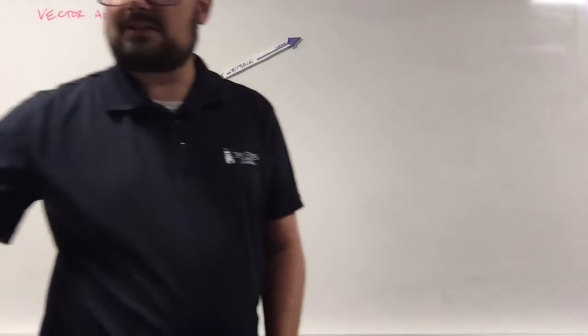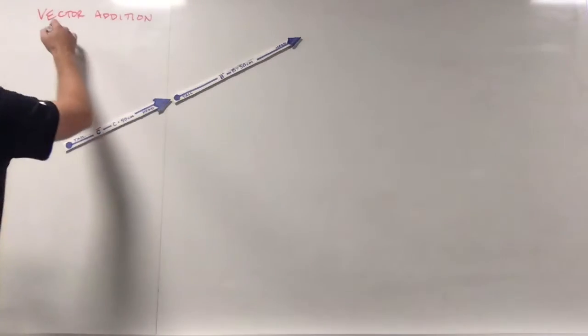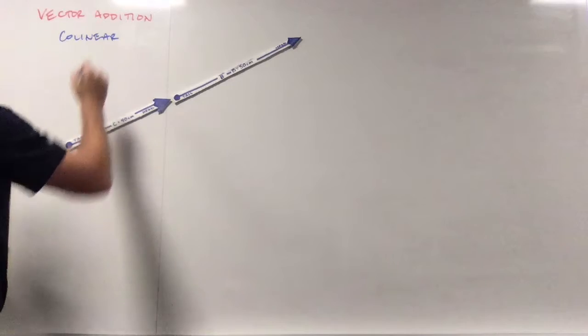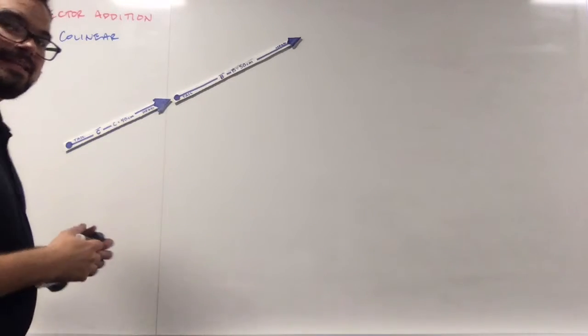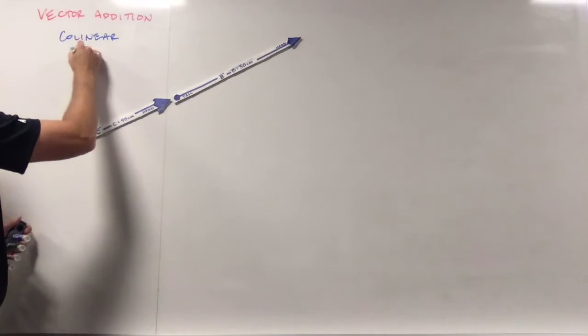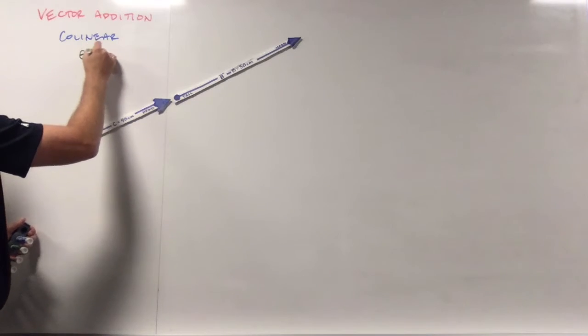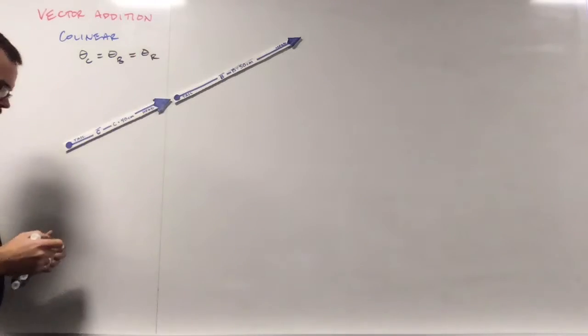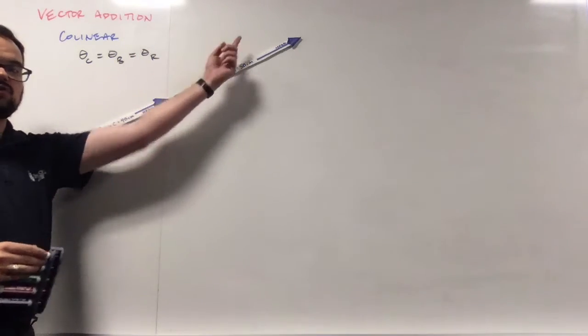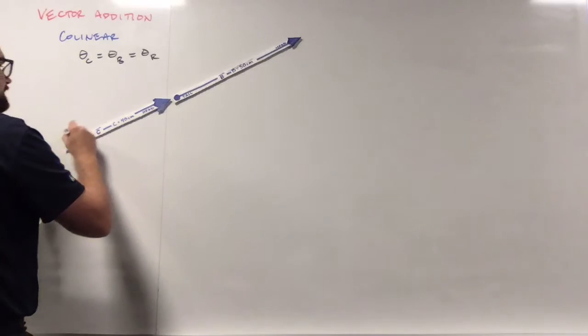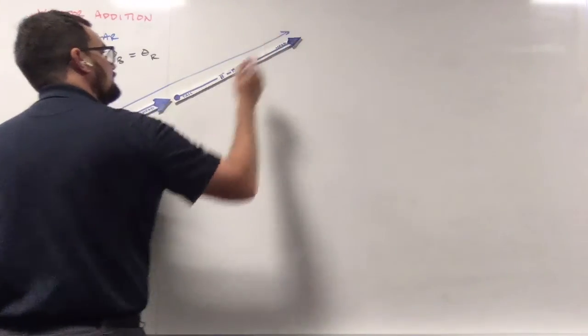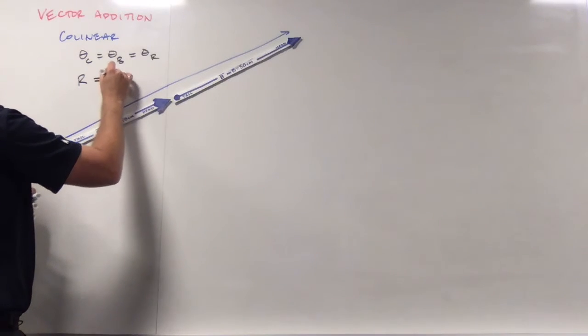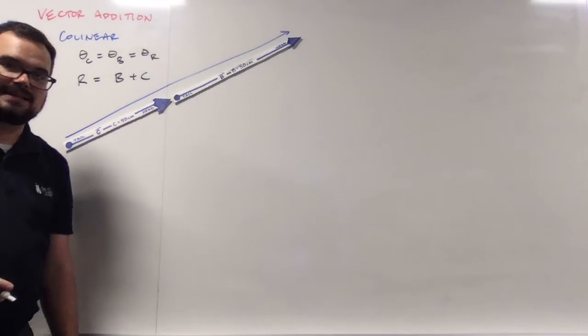So the first thing to remember is that we said that if we were doing collinear addition, all we were going to have to do was add the magnitudes, because it turns out that the angles from whatever reference line, if they're the same, when we add them up, we can put them tail to head, and then we just draw the total length r, such that the resultant is equal to the two magnitudes added together.